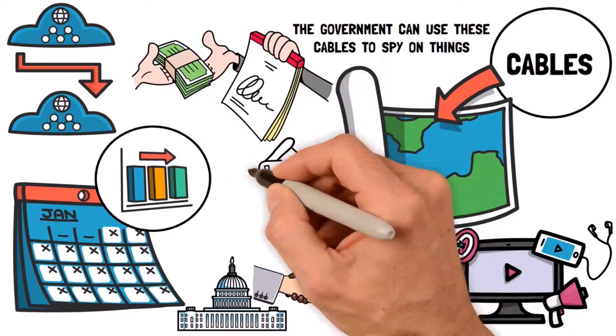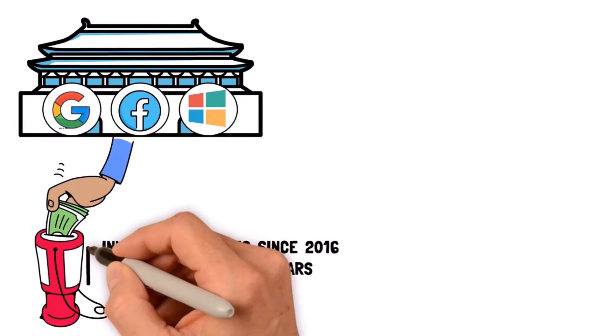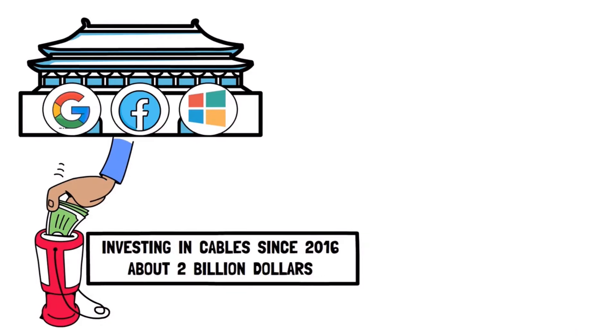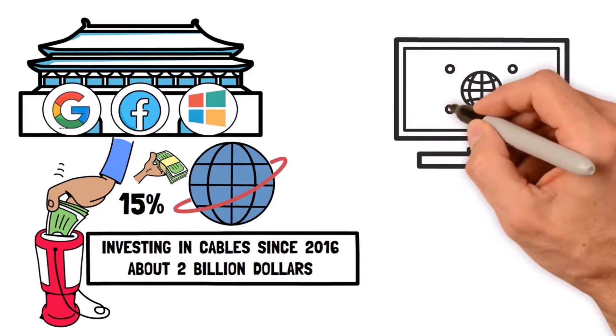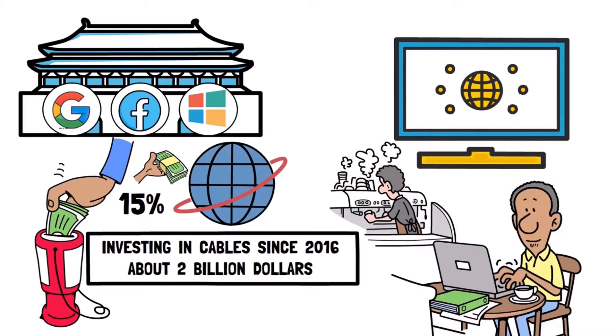Big tech companies like Google, Meta (formerly Facebook), and Microsoft have also joined in by investing lots of money in cables since 2016, about $2 billion, which is 15% of all the money spent on these cables around the world. These companies also use most of the world's internet, so by owning the cables, they get even more control.